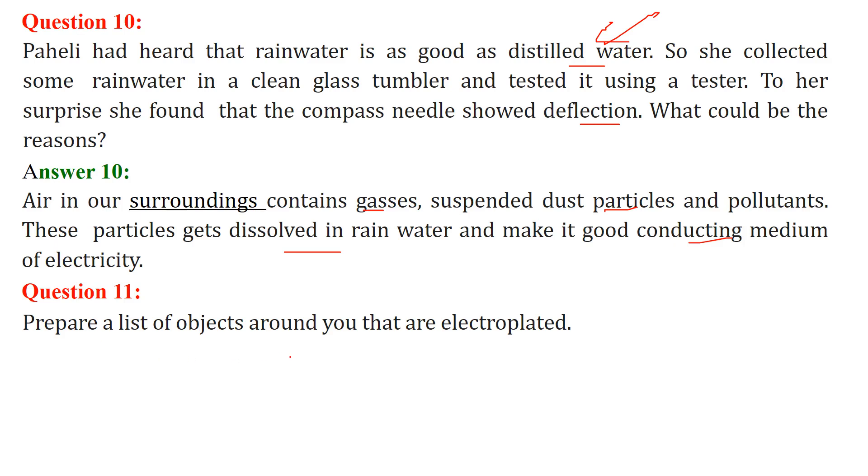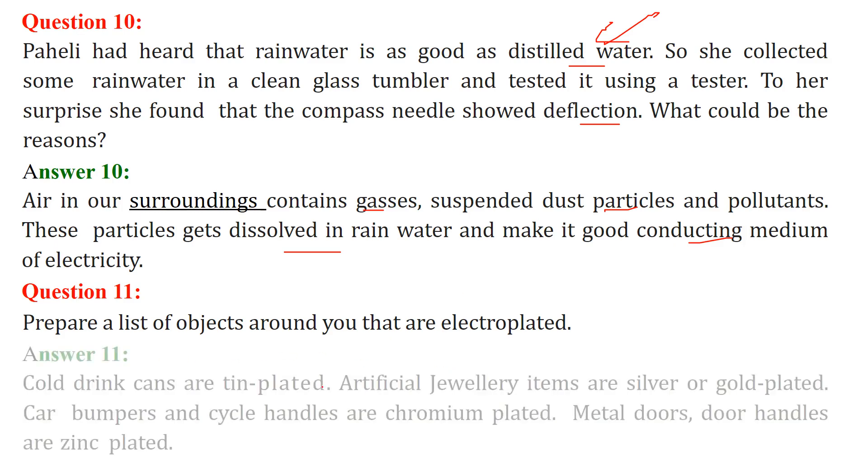Prepare a list of objects around you that are electroplated. Gold rings, cans are tin plated, artificial jewelry items are silver or gold plated, car bumpers and cycle handles are chromium plated, metal doors and door handles are zinc plated.